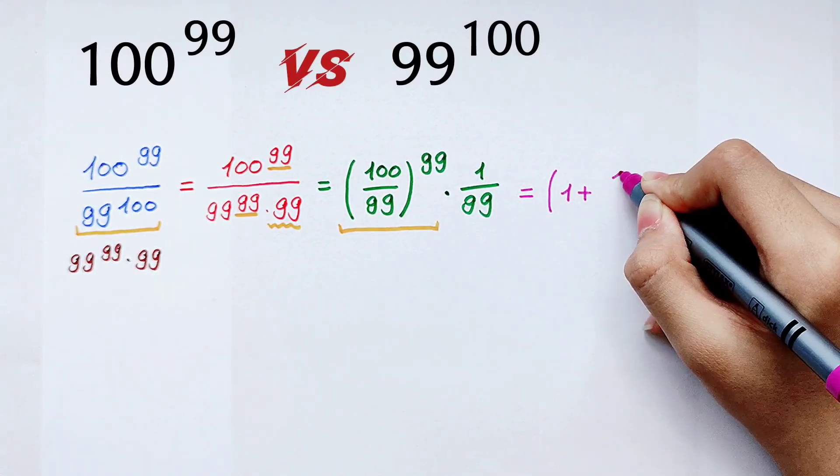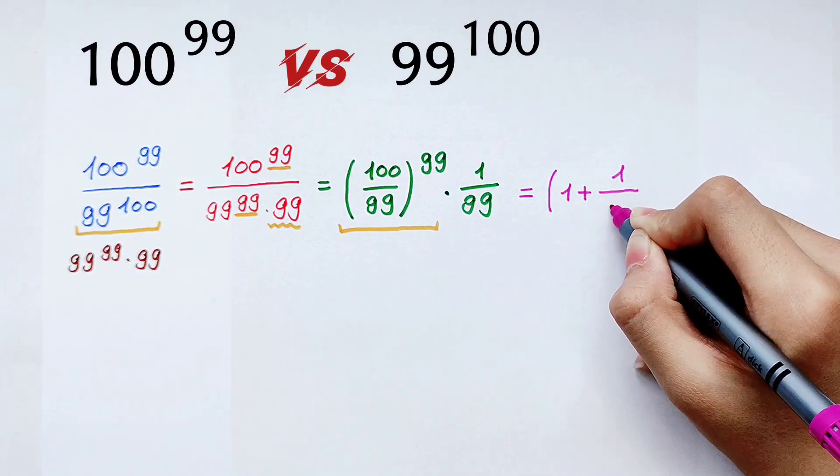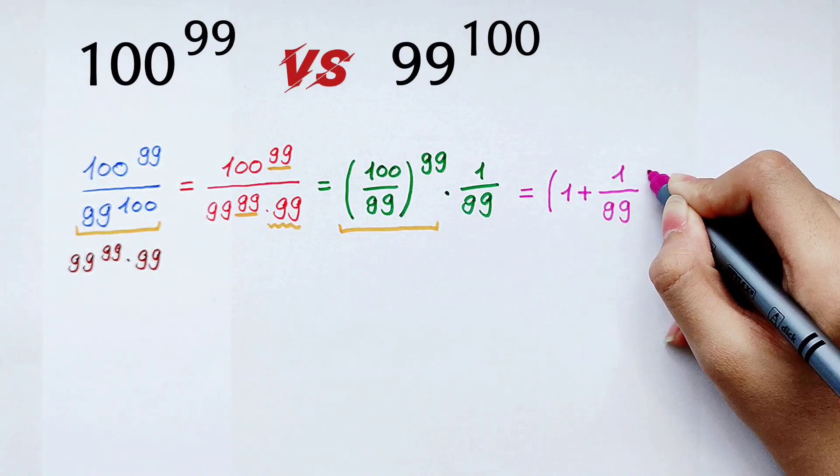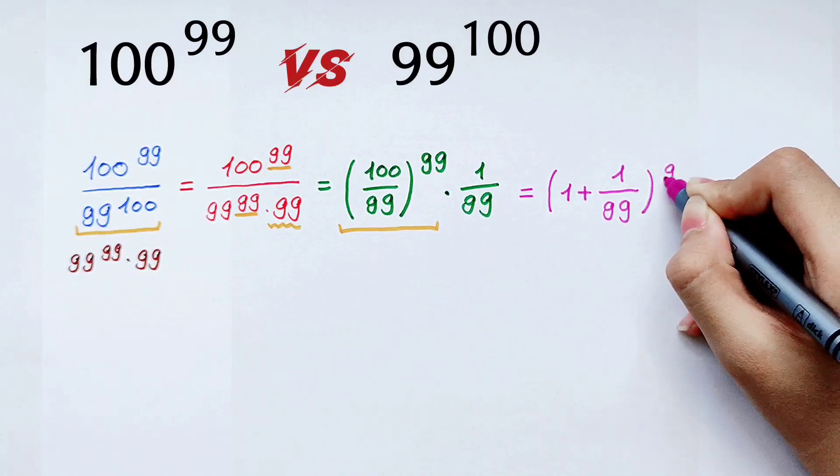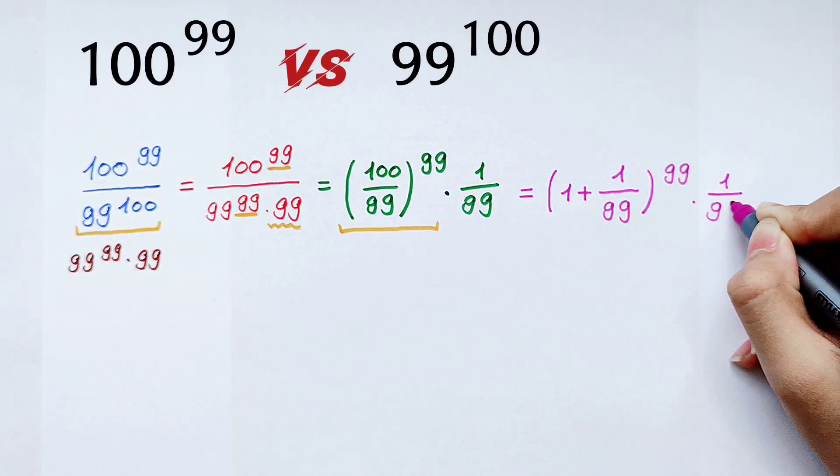So it's 1 plus—and here the numerator is 1—so it's 1/99. And here is a bracket, don't forget, to the power 99, then times 1/99.